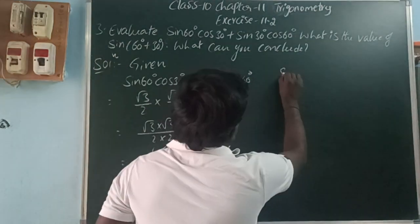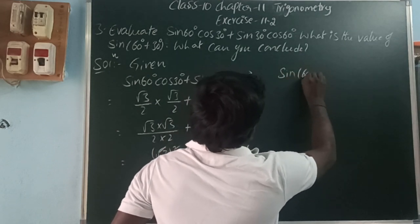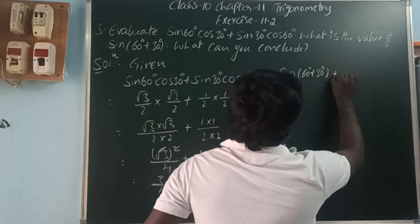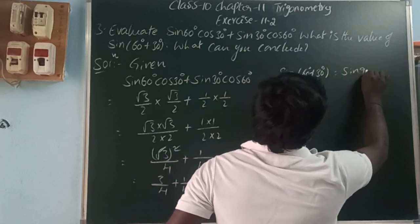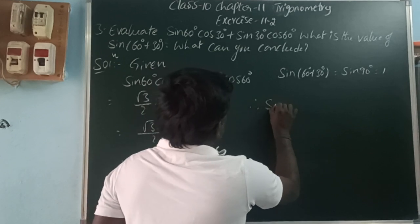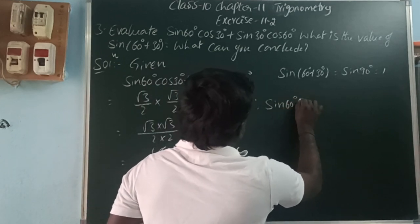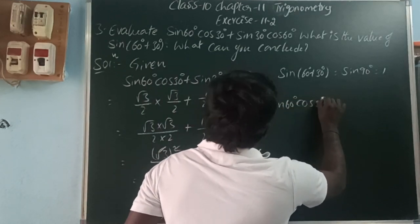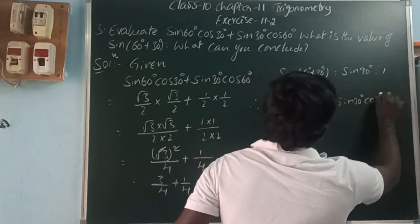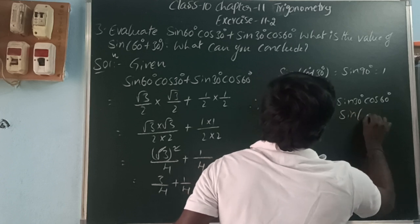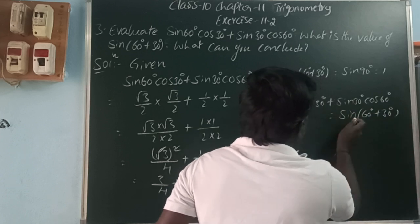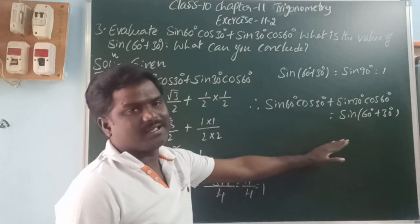Next, what is the value of sin(60 + 30)? That is sin90, and sin90 is equal to 1. Therefore sin(60+30) also equals 1.